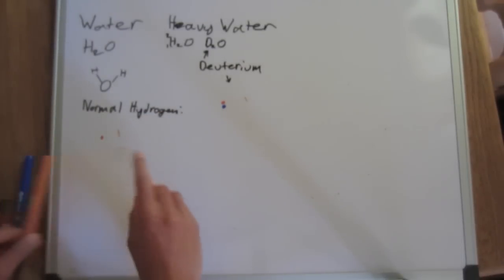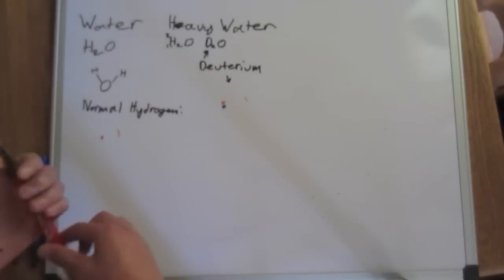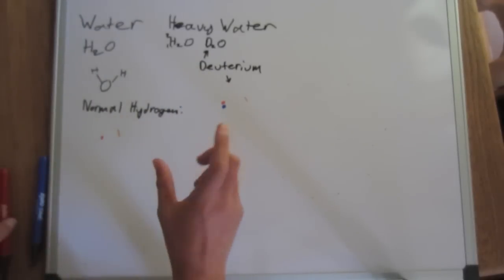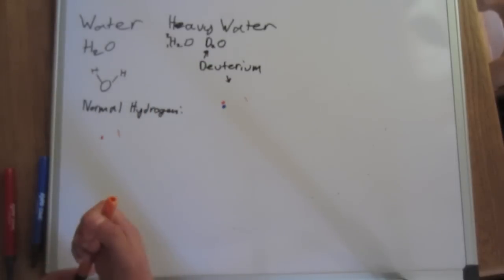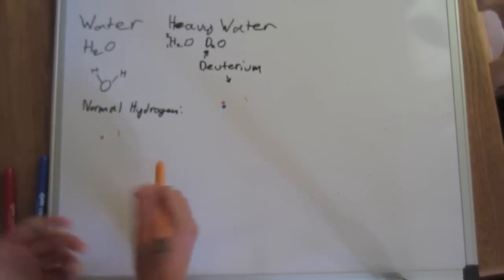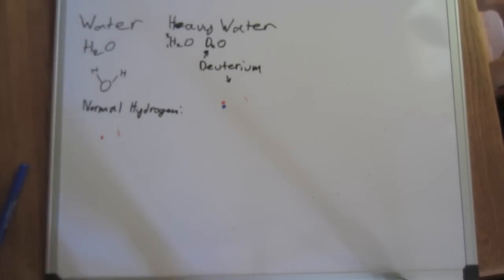So deuterium is twice as heavy as normal hydrogen. And because of that, the heavy water made with deuterium is about 11% heavier than normal water made with hydrogen. So I'm going to be showing that an ice cube made with deuterium water will actually sink when put in normal water.